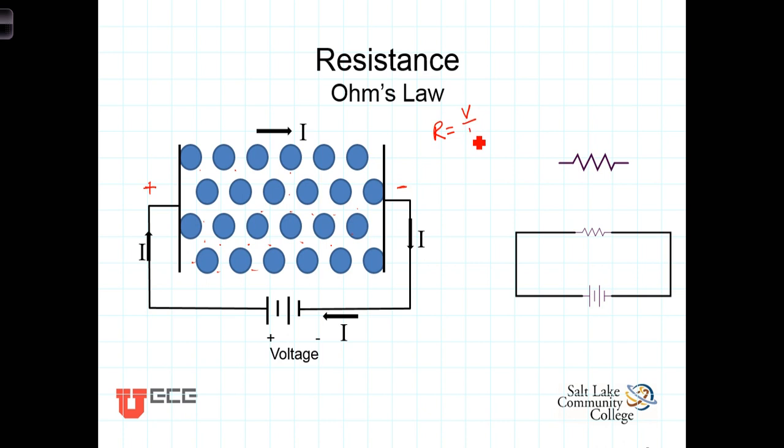The ratio of the voltage that is applied and the corresponding current that flows is the formal definition of resistance. In other words, take the voltage divided by the current, and that gives you the measure of resistance. Another way of stating that is V equals I times R, and frequently this is the form that Ohm's law is stated.